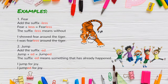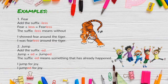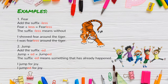Now let's look at some examples of suffixes. Number one, if you take the suffix less, which means without, and add it to the root word fear, it becomes fearless, meaning without fear. You can see the difference in the two sentences: 'I showed fear around the tiger' now becomes 'I was fearless around the tiger.' Number two, if I take the suffix ed, which means something that has been already done, and add it to the root word jump, it becomes jumped, meaning I have already jumped. You can see the difference in the sentences: 'I jump for joy' now becomes 'I jumped for joy.'